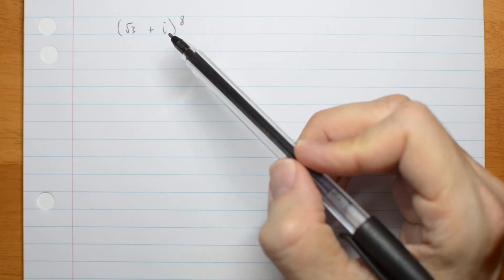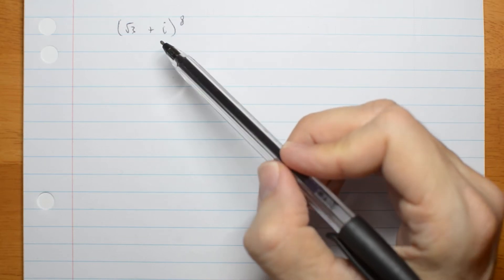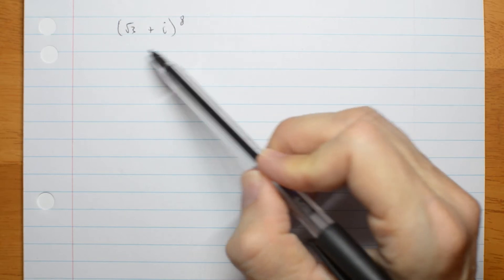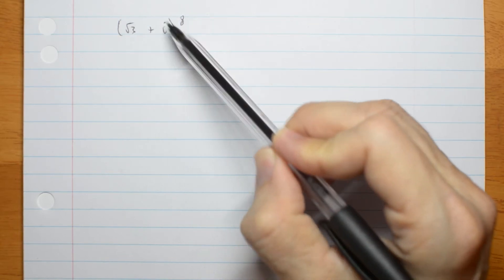Well the key is, de Moivre's Theorem applies to polar form. So the first thing I do is write this complex number in polar form.